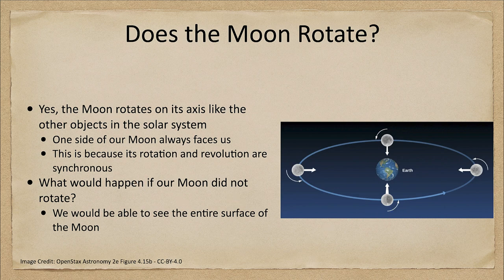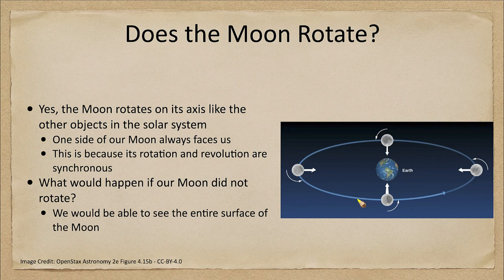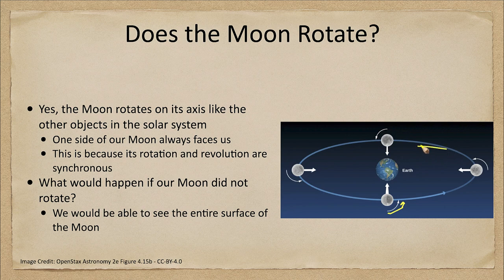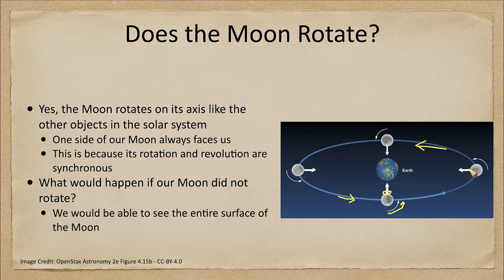A lunar day is how long it takes the moon to spin on its axis once. A lunar year is how long it takes it to go around Earth, and those are both exactly the same amount of time. When you do this, this one location on the moon will always be pointing toward Earth no matter where it is in its orbit.